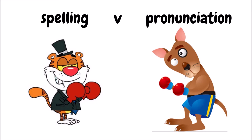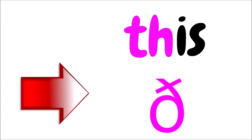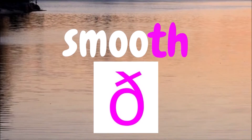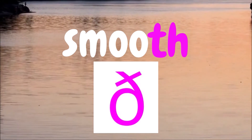As with all sounds in English, the spelling and pronunciation don't always match. Let's take a look at some spelling versus pronunciation. The ð sound is usually spelled with the letters 'th', like in these words: this, feather, smooth. But sometimes you see the letters 'th' and the sound is the unvoiced θ, like in these words...